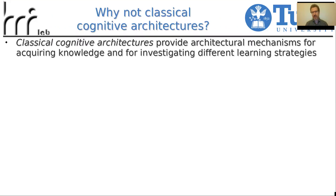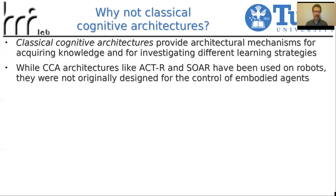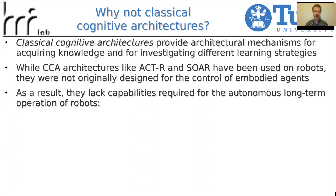Classical cognitive architectures have been used for over 40 years to provide architectural mechanisms for acquiring knowledge and for investigating different learning strategies. While classical cognitive architectures, such as ACT-R or SOAR, have been used on robots, they were not originally designed for the control of embodied agents. As a result, they lack capabilities required for the autonomous long-term operation of robots.